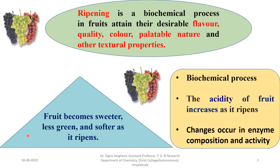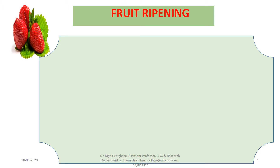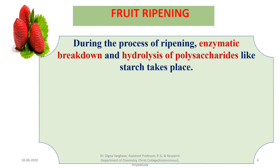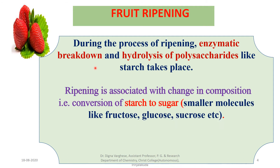What happens to the fruit when it ripens? It becomes sweeter, less green — the green color converts into yellow or red — and softer as it ripens. During the process of ripening, enzymatic breakdown and hydrolysis of polysaccharides like starch takes place — conversion of starch to smaller molecules like fructose, glucose, sucrose, etc.